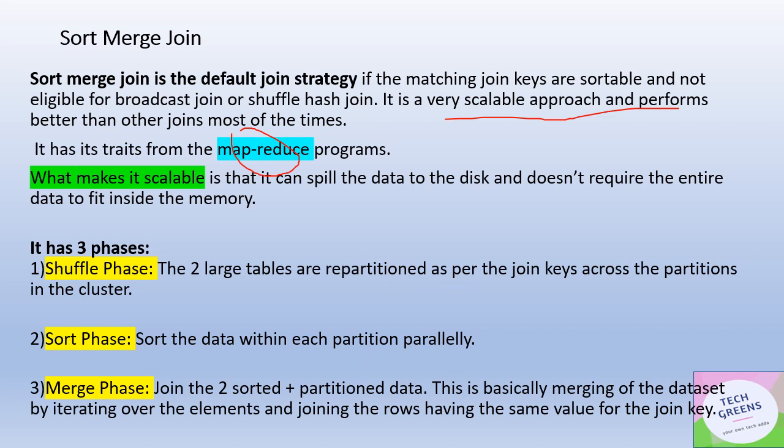Sort merge join has three phases. First is the shuffle phase, where tables are partitioned on the join keys for uniform data distribution across nodes in the cluster. Second is the sort phase, where data within each partition is sorted in parallel. Third is the merge phase — analogous to the reduce phase of MapReduce — where the two sorted partition datasets are joined by iterating over elements to find rows from both sides where the joining key matches. Since the data within each partition is already sorted, this iteration is very fast.